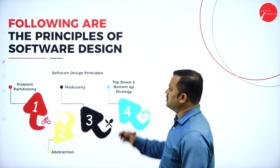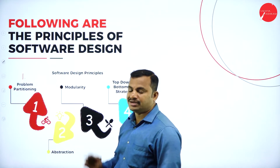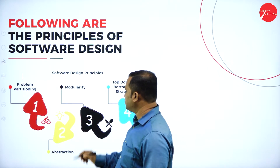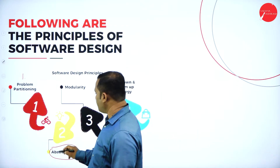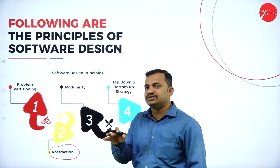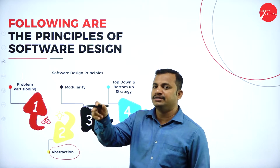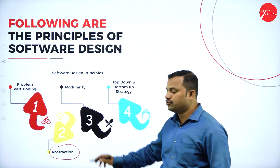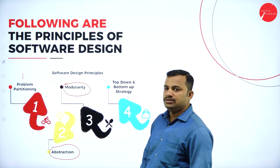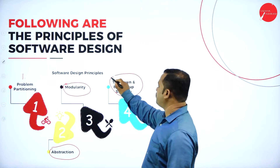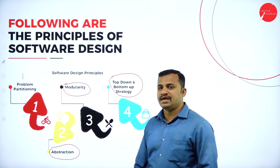The following principles of software design include: first, problem partitioning — dividing into smaller sub-problems. Once divided, we go for abstraction, where complete detailed information is not given to the user. We have two types: functional abstraction and data abstraction. Then we have modularity as the third principle. Finally, we have top-down and bottom-up approach strategies. These are the design principles we generally follow in the software design process.